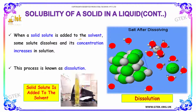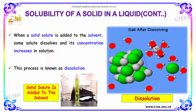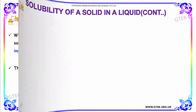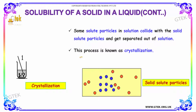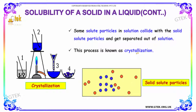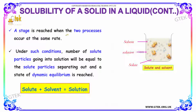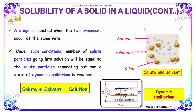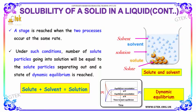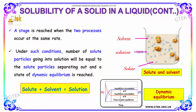When a solid solute is added to the solvent, some solute dissolves and its concentration increases in solution. This process is known as dissolution. Some solute particles in solution collide with the solid solute particles and get separated out of solution. This process is known as crystallization. A stage is reached when the two processes occur at the same rate, and a state of dynamic equilibrium is reached — the number of solute particles going into solution equals the particles separating out.